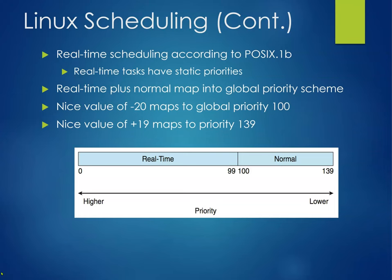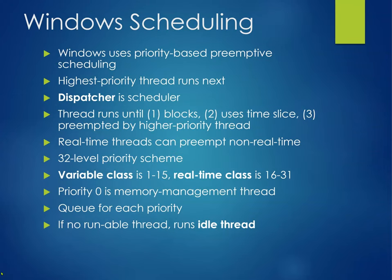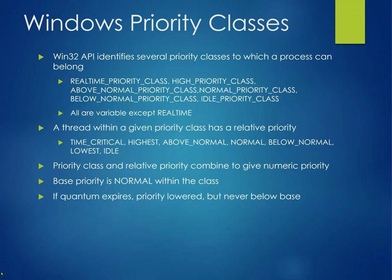Linux also supports POSIX real time. Windows uses priority-based preemptive scheduling — the highest priority thread always runs next. The dispatcher is part of the scheduler; a thread runs until it blocks, uses its time slice, or is preempted by a higher priority thread. Real-time threads can preempt non-real-time threads. There's a 32-level priority scheme: the variable class is 1 through 15, and real time is 16 through 31. Priority zero is reserved for memory management threads. There's a queue for each priority, and if no runnable thread exists, it runs an idle thread. The API identifies several priority classes: real time, high, above normal, normal, below normal, and idle.